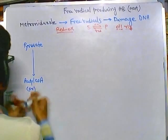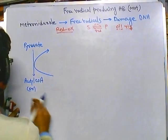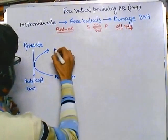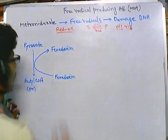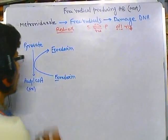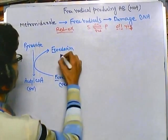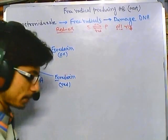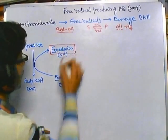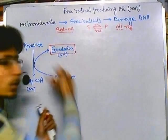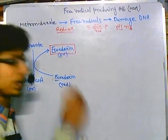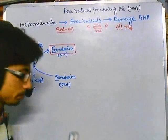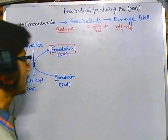Inside the cell we have ferredoxin — an iron-containing molecule, since iron (Fe) is attached to it. Ferredoxin can be converted from its reduced form to its oxidized form. This ferredoxin is present inside the cell all the time. Pyruvate is also present, and the conversion of pyruvate to acetyl-CoA is going on continuously via the pyruvate dehydrogenase complex, also called the PDH complex.